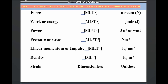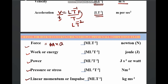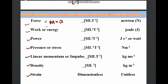Force is mass × acceleration. Mass has dimension M¹ and acceleration has dimensional formula L T⁻². So force = M¹ × L T⁻², giving us M L T⁻² collectively. Its unit is newton.